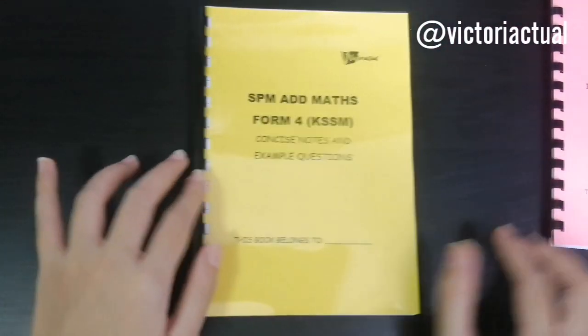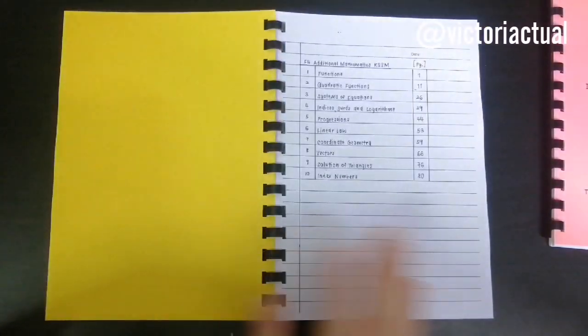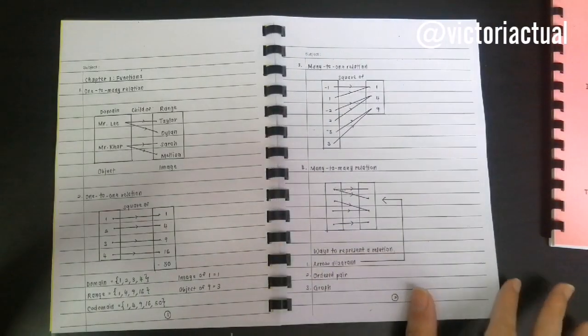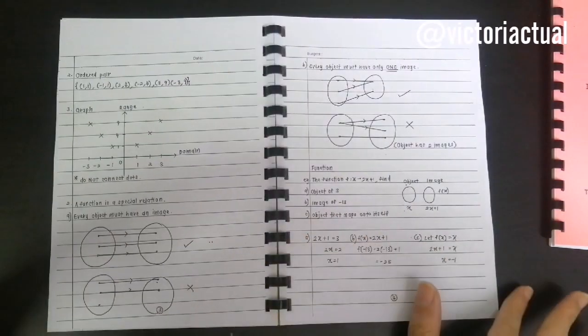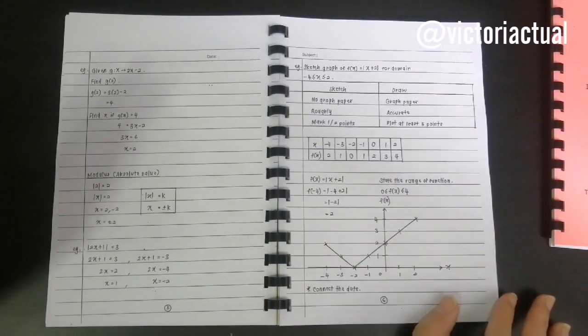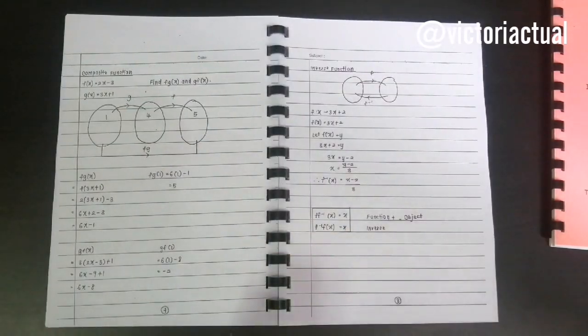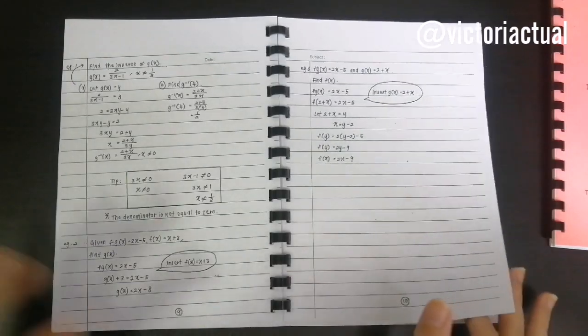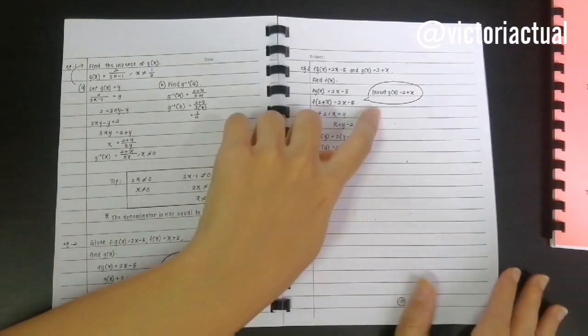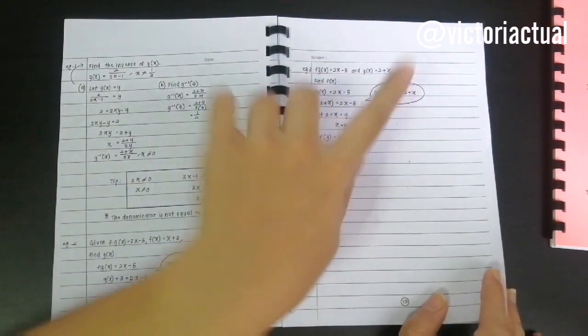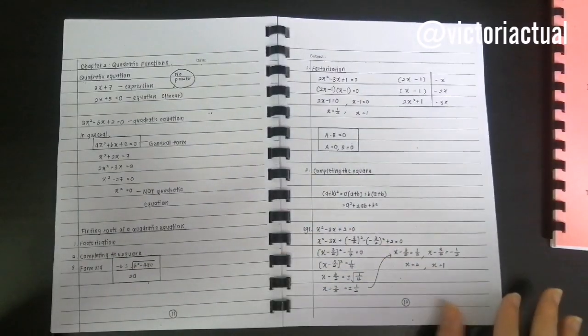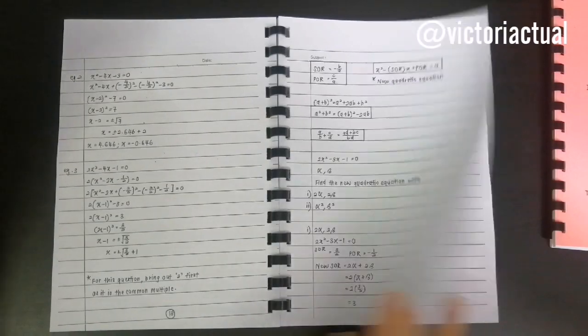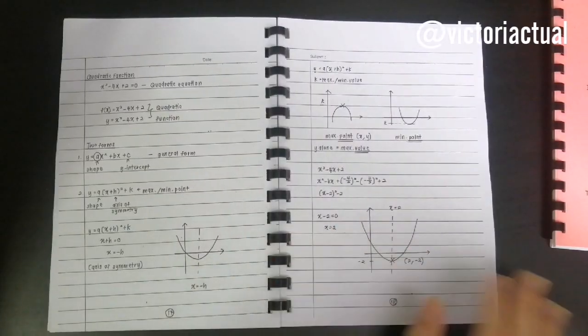Now we'll move on to AddMaths KSSM. These are the complete notes from chapter 1 to chapter 10. The question I received is, is there example questions for this book? Of course there's example questions. There's explanation as well in the bubble here. The bubble is where I explain stuff. Just a lot of example questions.